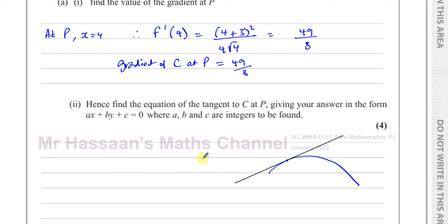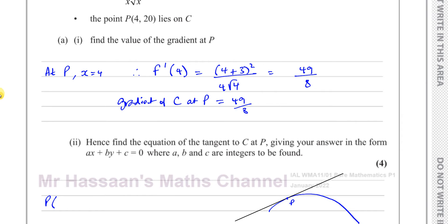If I want to find the equation of the tangent to the curve at C, I'm finding the equation of a straight line, which is in the form y equals mx plus c, or in this case, I want us to write it in this form, ax plus by plus c equals 0, where a, b, and c are integers to be found. I need to know the gradient of the line at that point. I need to find a point on that line, which is P. P is a point on the tangent because the tangent passes through the point P. So that's a point on the tangent, and we know the coordinates of P of 4, 20.